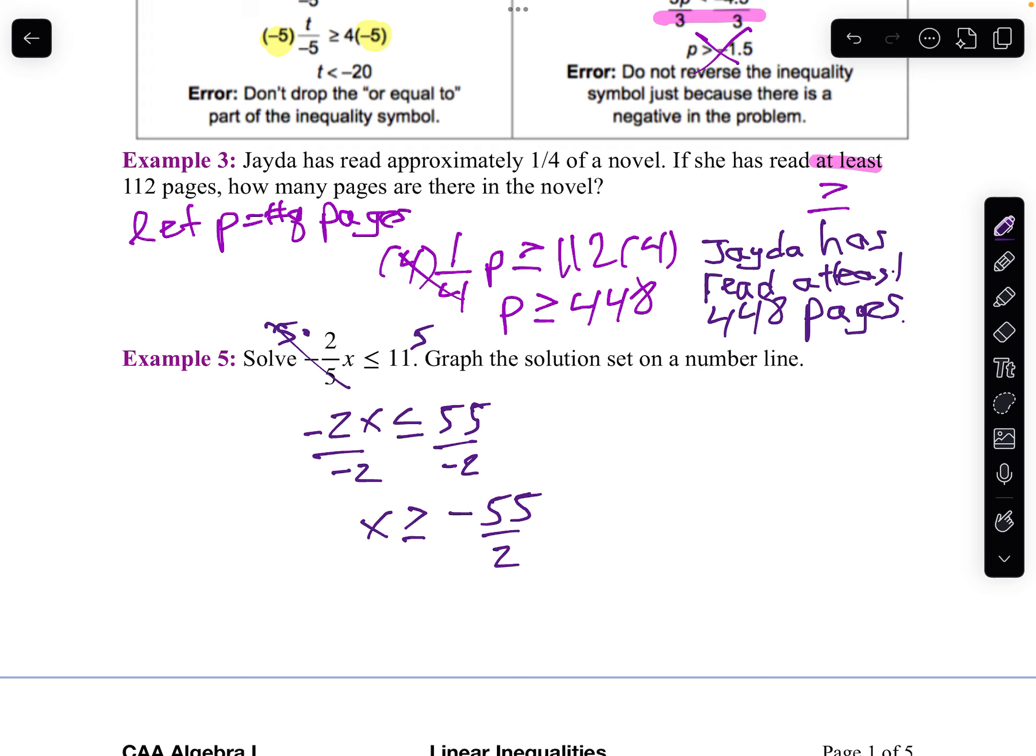Because what I want to do is I want to graph this on the number line. Since I'm graphing it on the number line, first, I'll write it in set notation. The set of x such that x is greater than or equal to negative 55 over 2.